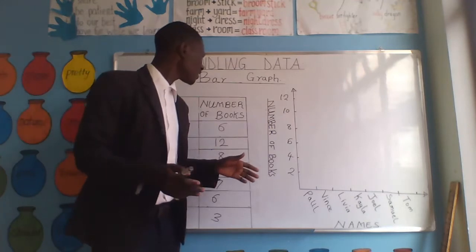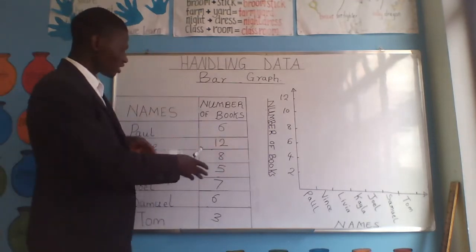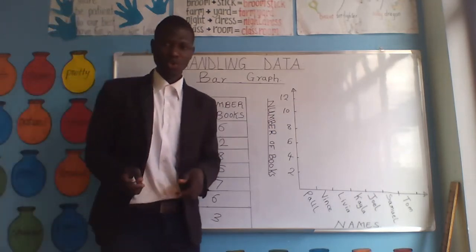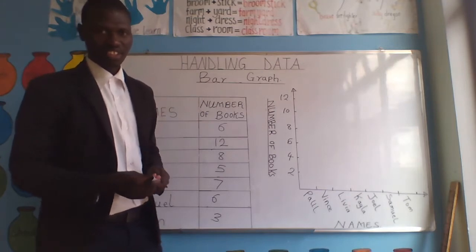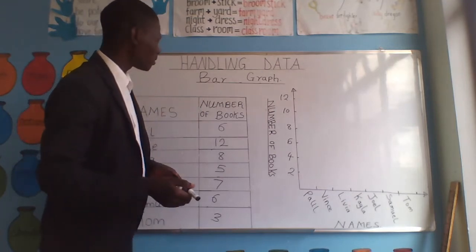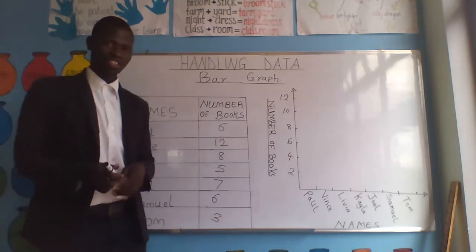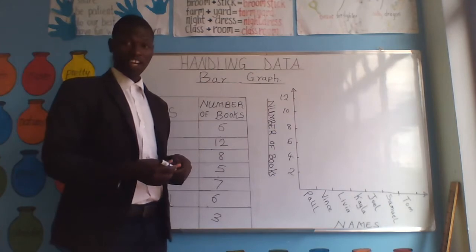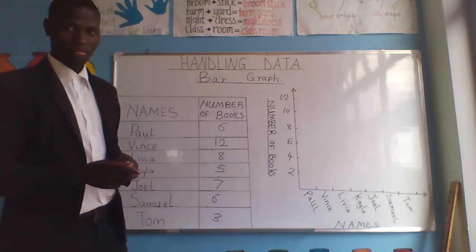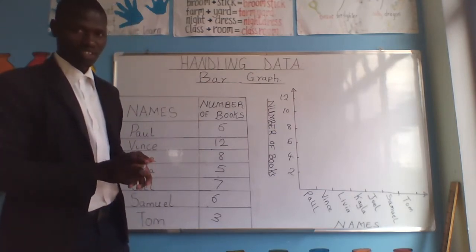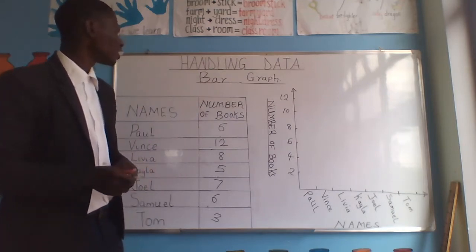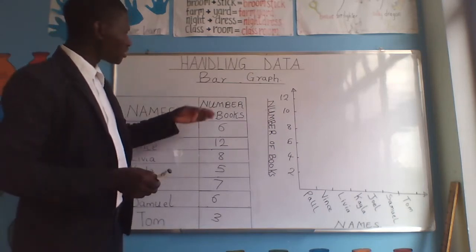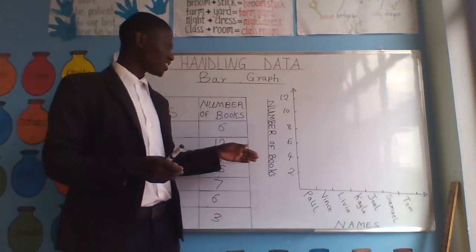We saw different methods of representing data. One of the methods was — I think you remember — it was tally. We saw how to represent data in tally. Another method was, yes, good — it was bar graph, or bar chart. That was the second method of representing data.